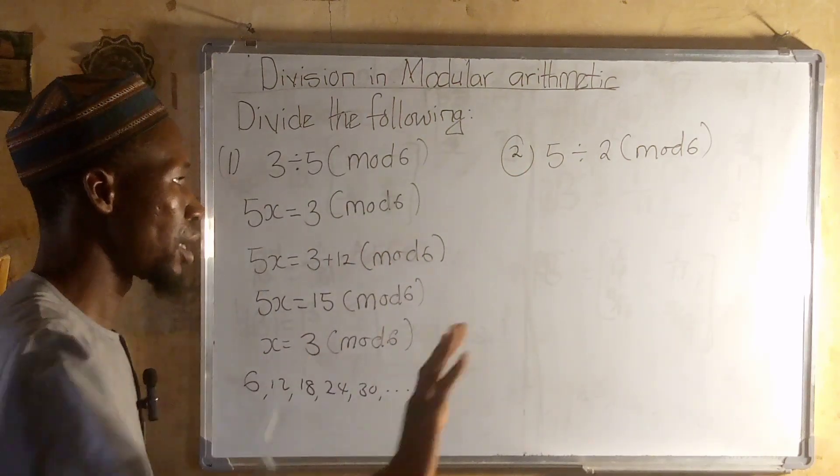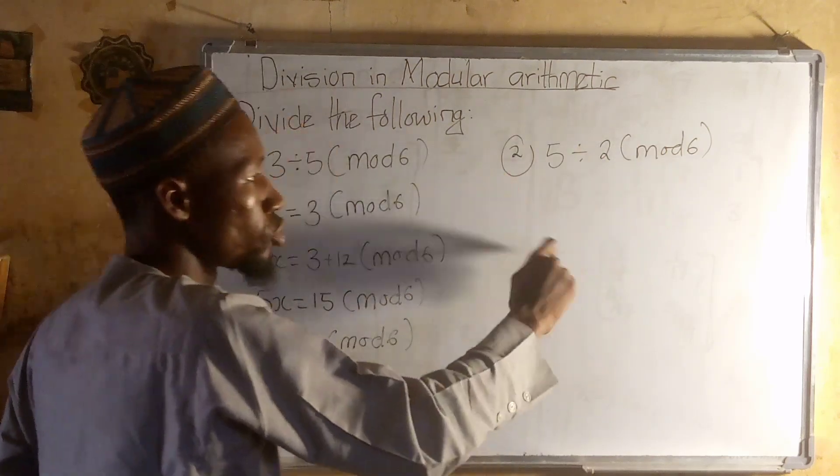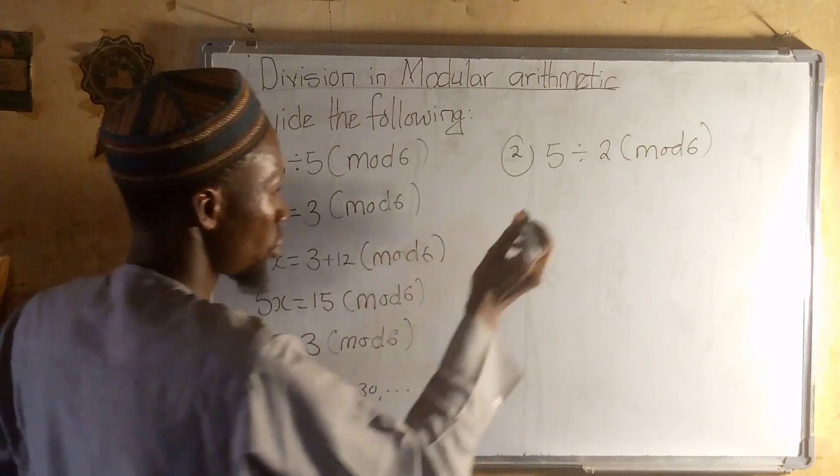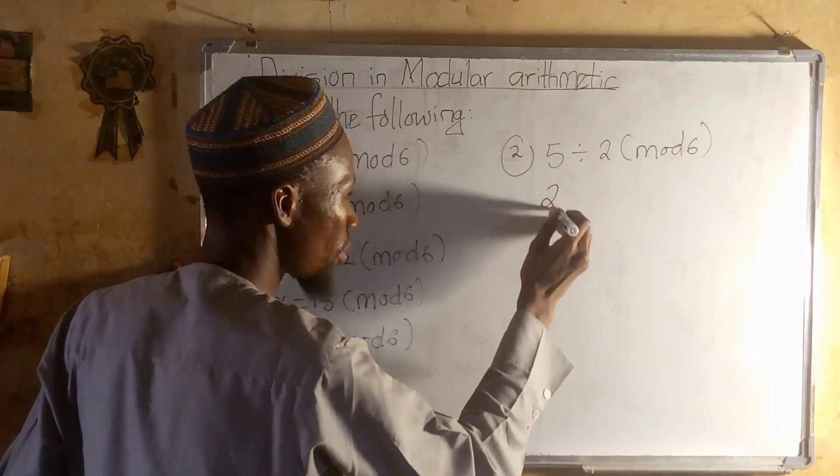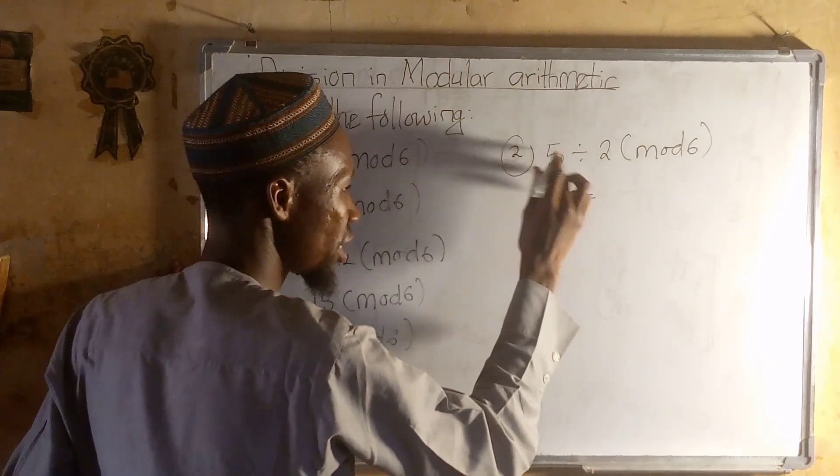Now we have 5 divided by 2 mod 6. We write this as 2x equals 5 mod 6.